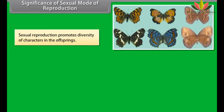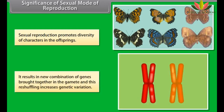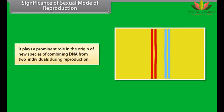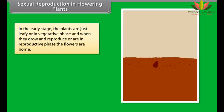Sexual reproduction promotes diversity of characters in the offspring. It results in new combinations of genes brought together in the gamete, and this reshuffling increases genetic variation. It plays a prominent role in the origin of new species by combining DNA from two individuals during reproduction.